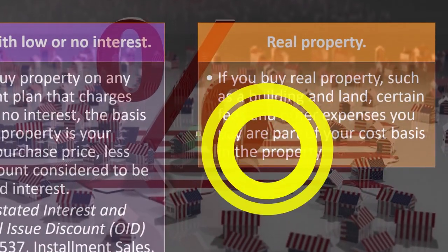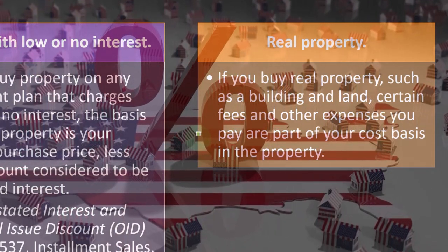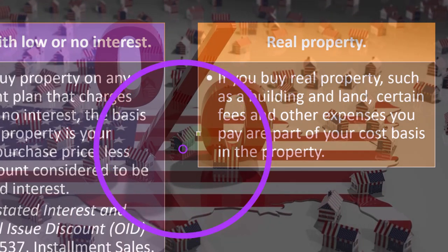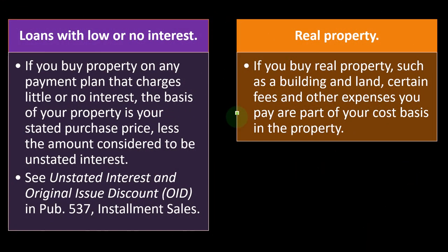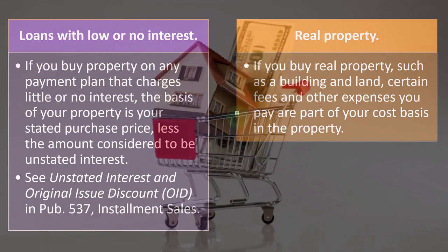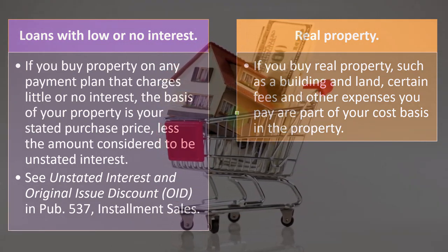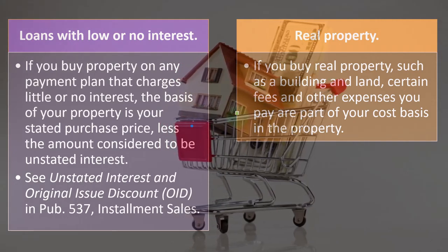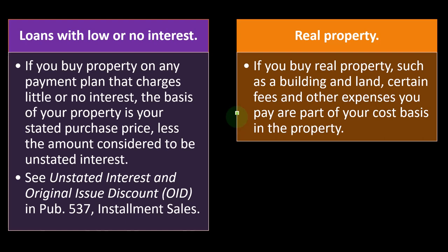Regarding real property: if you buy real property such as a building and land, certain fees and other expenses you pay are part of your cost basis. You might have legal fees and other costs associated with the purchasing process. From the taxpayer perspective, we'd like to expense all that in the year we paid for it, but the IRS says those costs were necessary to purchase the building and must be included in the cost of the building — meaning you depreciate them over the useful life instead of getting the expense upfront.